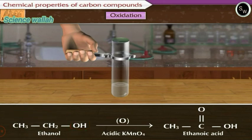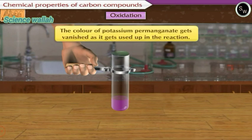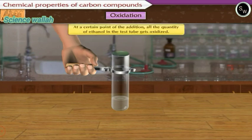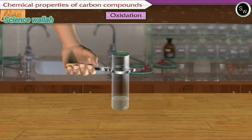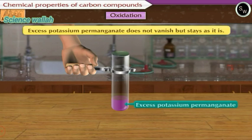On starting drop by drop addition of potassium permanganate in ethanol, the color of potassium permanganate gets vanished as it gets used up in the reaction. At a certain point of the addition, all the quantity of ethanol in the test tube gets oxidized. If we continue the addition of potassium permanganate beyond this point, it is not used up and becomes excess, so the pink color of this excess potassium permanganate does not vanish but stays as it is.